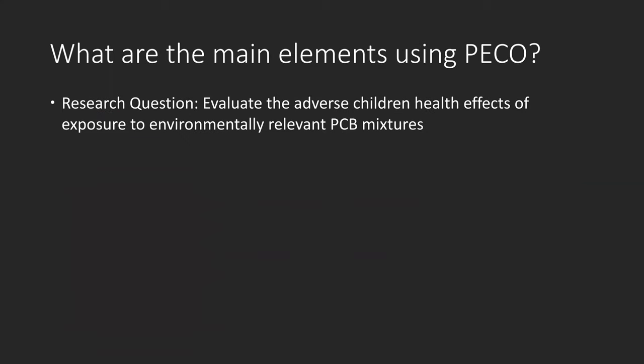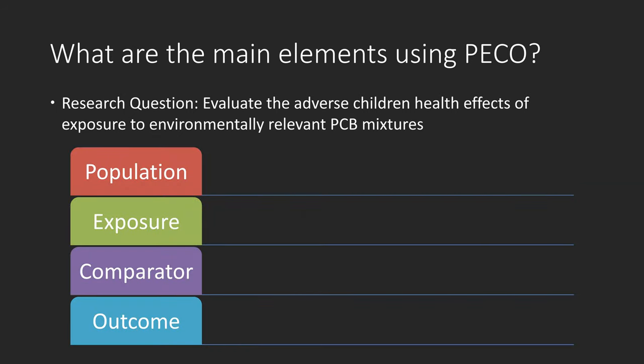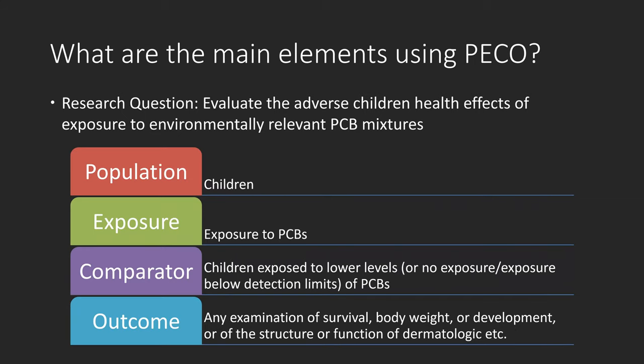Let's look at an example: evaluate the adverse children's health effects of exposure to environmentally relevant PCB mixtures. The four elements are: population is children; exposure is PCB; comparator is children exposed to lower levels of PCB or no exposure, i.e., exposure below detection limits; outcome is any examination of survival, body weight, or development, etc.